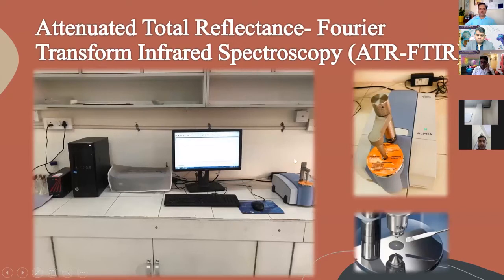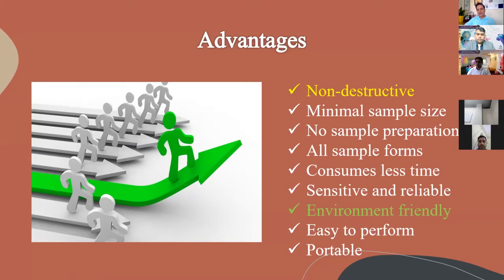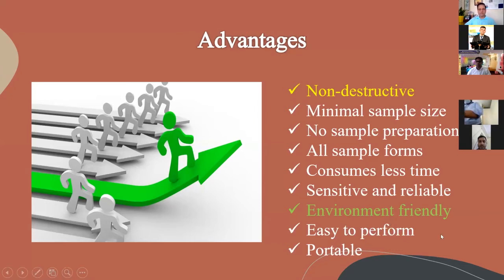Most widely used right now is ATR-FTIR — attenuated total reflectance Fourier-transform infrared spectroscopy. The advantages of this method are: first and foremost, its non-destructive nature — it does not consume the sample during analysis. Second, minimal to no sample preparation is required. Third, samples in all forms can be analyzed. It consumes very little time — within two to three minutes, analysis is done. It is sensitive, reliable, and very easy to perform. Portable and handheld instruments are available, allowing on-the-spot analysis. Last but not least, this technique is environment-friendly — no chemicals are utilized most of the time. It's a futuristic technique.